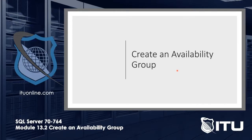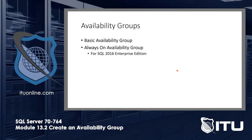Let's create an availability group. We have two kinds: basic and always-on. Basic is for SQL 2016 Standard — it is the new version of database mirroring and is meant to replace it. Always-on is for SQL 2016 Enterprise.